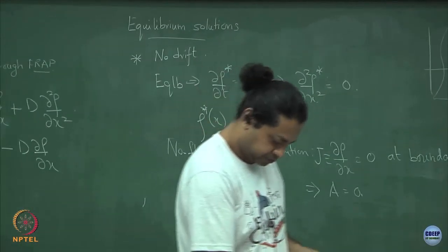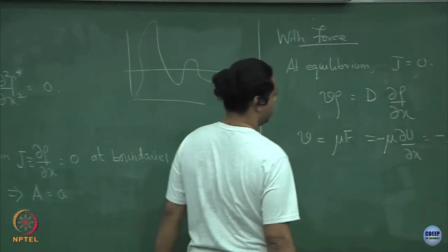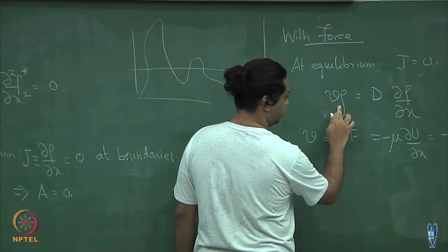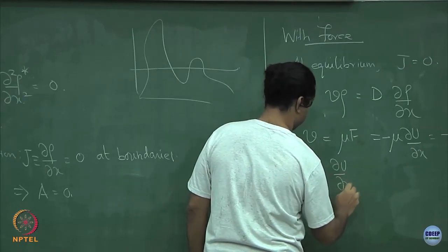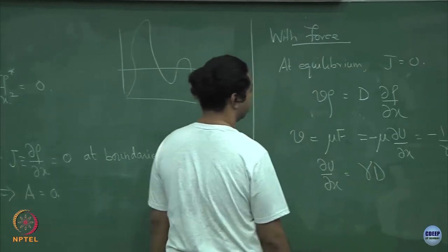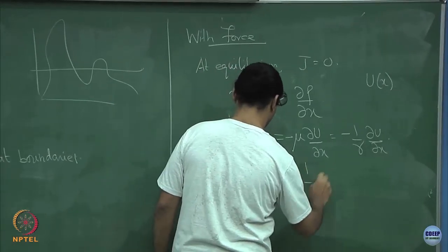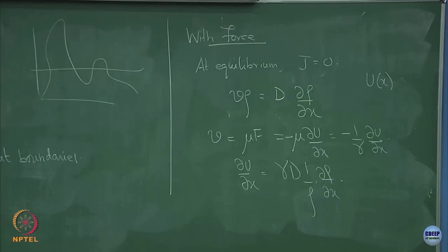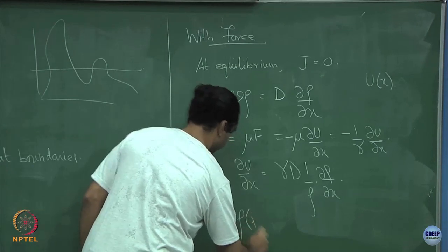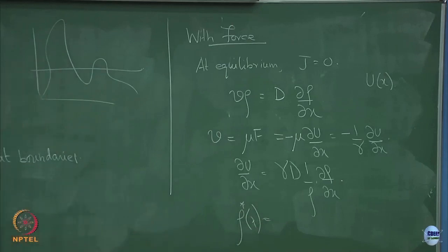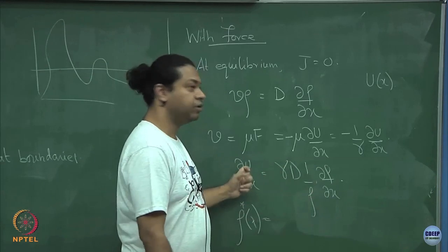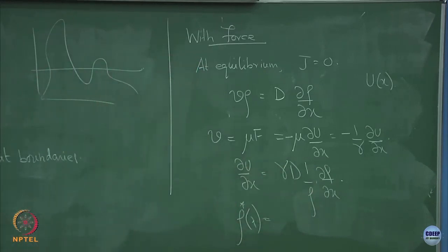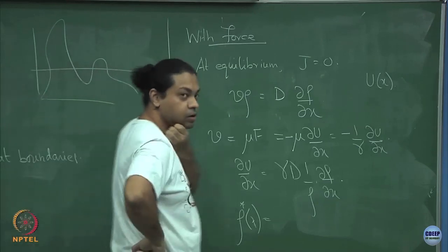Now you need to solve that equation. Substituting, del U del x equals gamma·D · (1/rho) · del rho del x. What is the solution of this equation? Here you have del rho divided by rho on one side and dU on the other — so the answer is an exponential.